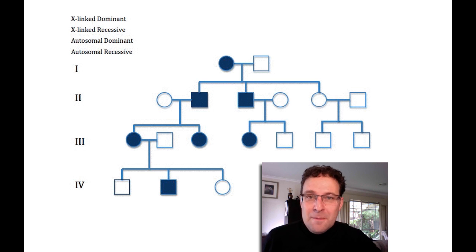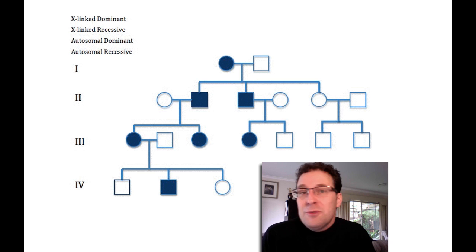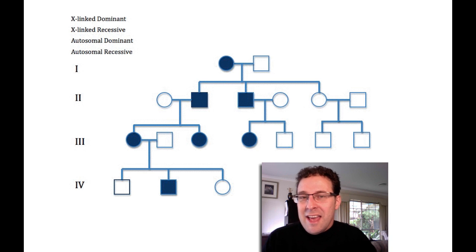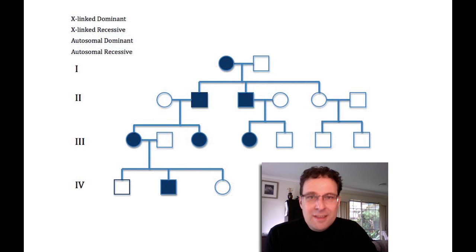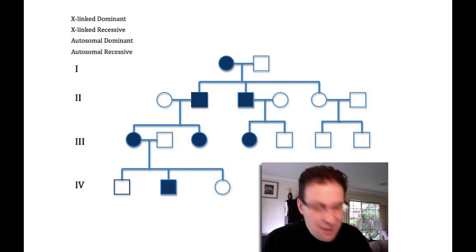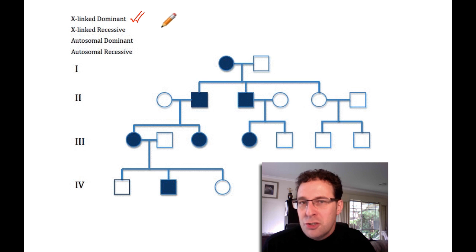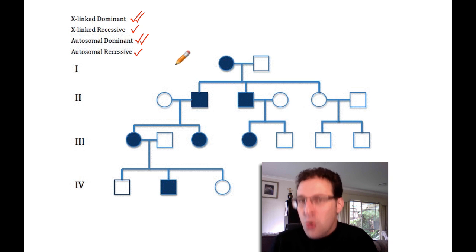In the previous examples, the answer to the first question has always been yes — there has always been somebody whose phenotype was different to both of their parents' phenotypes. But in this example, that's not the case. Everybody in the pedigree has at least one parent who has the same phenotype as them, whether they're shaded or not. So what does that tell us? It tells us that it probably is a dominant trait. I'm going to put two ticks beside the dominant phenotypes, but it doesn't rule it out as a recessive trait — it could be recessive, but it's probably dominant.